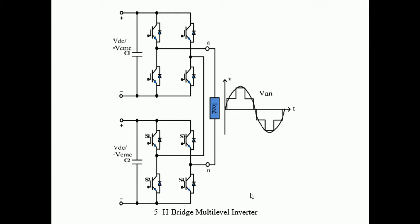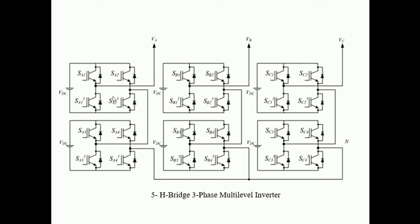This is the five-level cascaded H-bridge single-phase inverter. For the three-phase version, we have three legs — red phase, yellow phase, and blue phase. The magnitudes are the same but with a 120-degree phase shift between them, created by proper switching of the gate pulses.